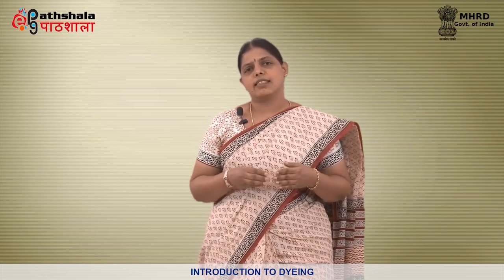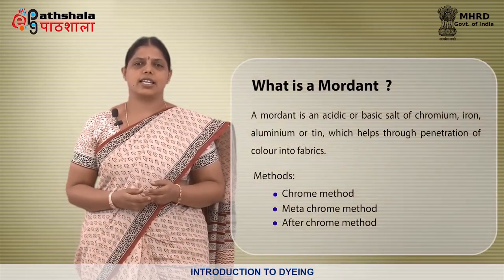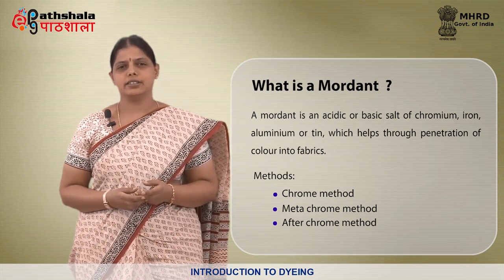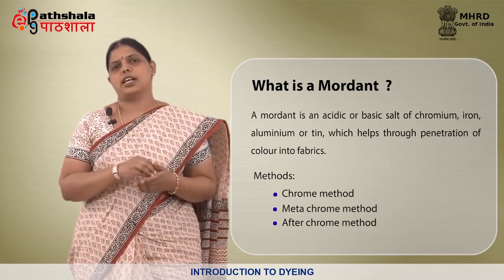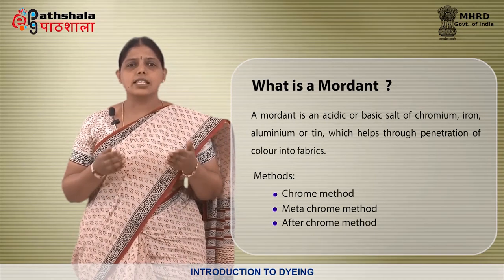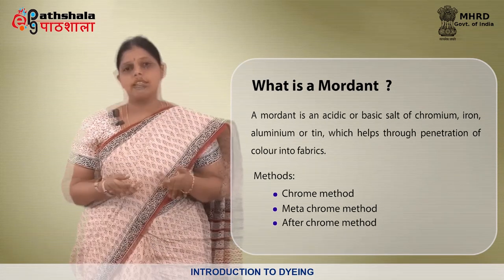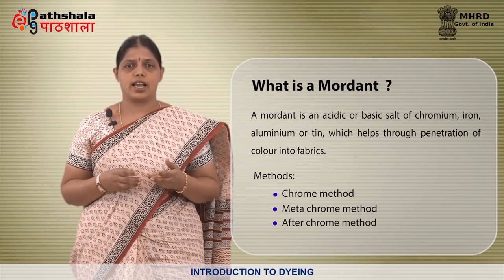The ninth one is mordant dyes. Before the development of synthetic dyes, it was found that dyeing of wool becomes wash fast with the addition of some metallic salts. These salts were named as mordants. The word mordant is derived from the French word 'morder' which means to bite. A mordant is an acidic or basic salt of chromium, iron, aluminium or tin which helps through penetration of color into fabrics. The dye that has affinity for one type of fiber may not have affinity for another type. This problem can be overcome by the use of mordants. There are three methods of mordant dyeing: chrome method, meta chrome method and after chrome method.